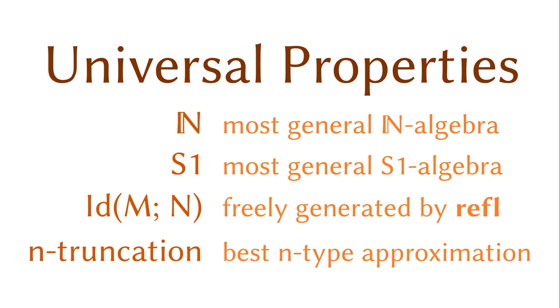We have seen quite a few universal properties during the semester. Yes, I have been secretly teaching you category theory without saying the word category. For example, the natural number type is the most general type with a zero and a successor, the circle is the most general type with a point and a loop, and the identification types are the most general types with reflexivity.